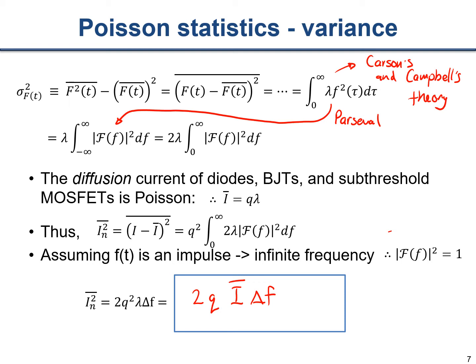This is a very important formula — I want you to memorize it. It's two times the fundamental charge q, times the mean of the current, times delta f. Delta f is the bandwidth over which you are performing this integral. Obviously if we integrate over infinite frequency we get an infinite result, but that's not practical. We need to set some bounds of integration, and this is really important — it leads to a key point we need to discuss in more detail.